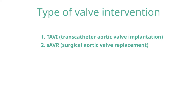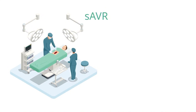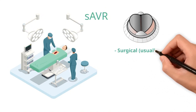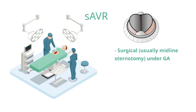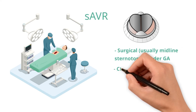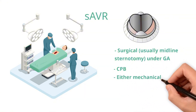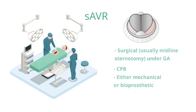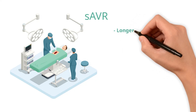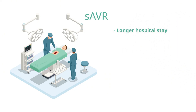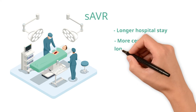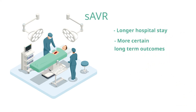Surgical aortic valve replacement is performed by a cardiothoracic surgeon via open surgery, usually via a midline sternotomy, under general anaesthesia with the patient on cardiopulmonary bypass. Either mechanical or bioprosthetic valves can be inserted via the surgical approach. Patients usually stay in hospital around a week if there are no complications, and it is a more established technique with good long-term data, especially for mechanical valve replacements.